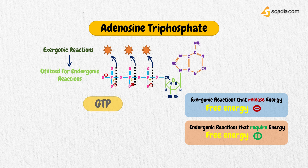The other nucleoside triphosphate coenzymes — GTP, CTP, and UTP — have similar chemical properties to ATP, but they are used for different tasks in metabolism.